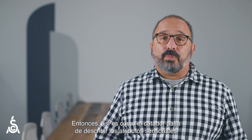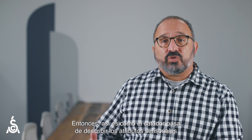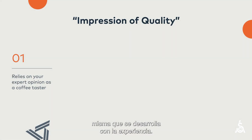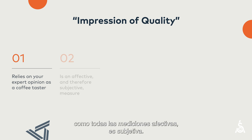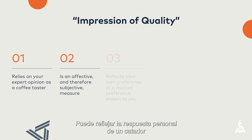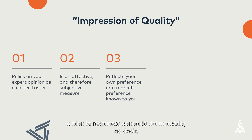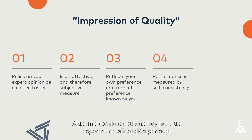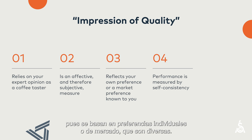So this is how a cupper switches from describing the coffee's sensory attributes to expressing their impressions of a coffee's quality. This process relies on a cupper's expert opinion developed through experience. It's important to remember that this assessment, like all effective measures, is subjective. It might reflect a cupper's personal responses or a known market preference — in other words, predicting others' effective response. Importantly, one would not expect perfect alignment between cuppers on effective measurements, since they are based on individual or market preferences, which are diverse.